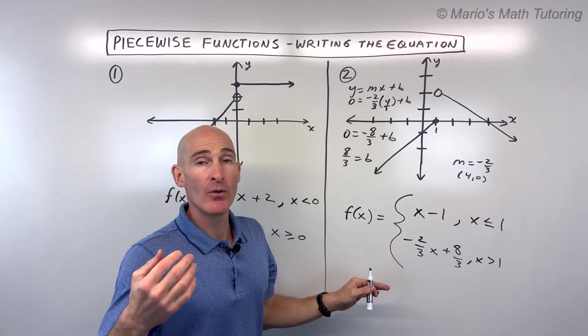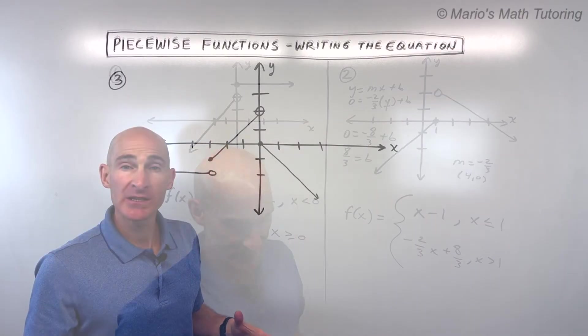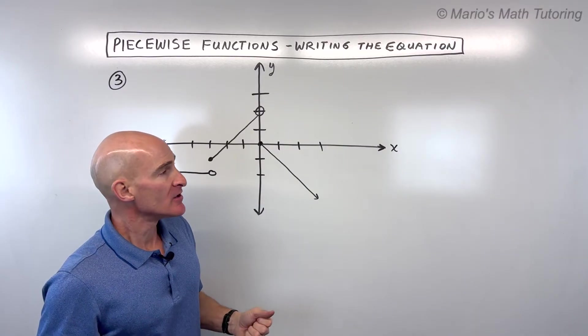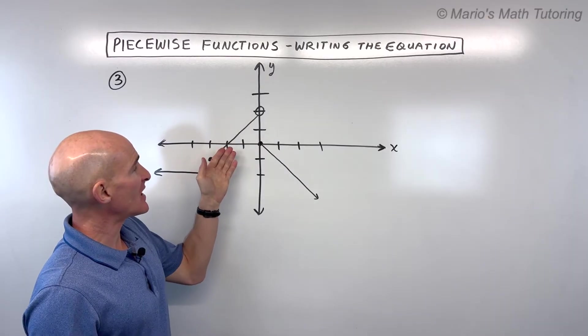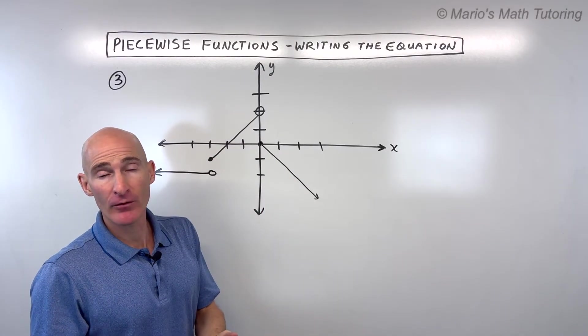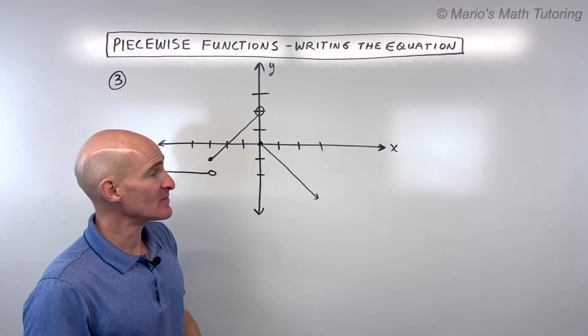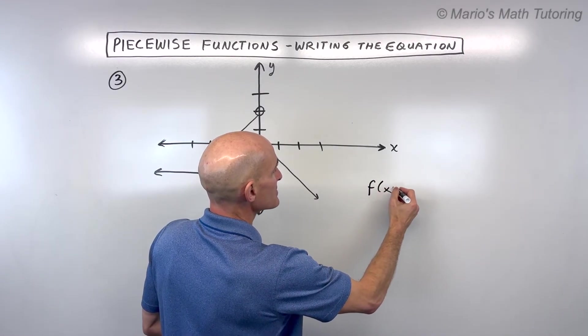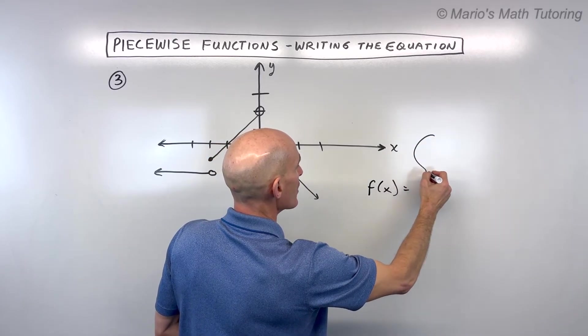So let's take a look at one more example. See if you can pause the video and do this third example on your own and we'll go through it together. So this one's interesting because we actually have three pieces, and there's really no limit. You could have four, five, six, as many as you want.